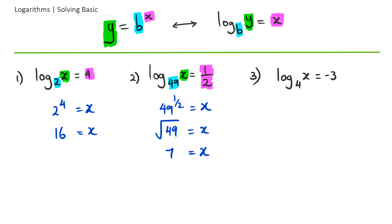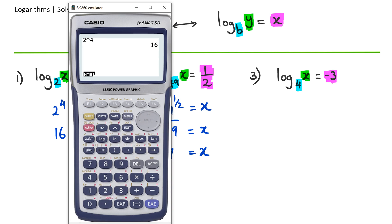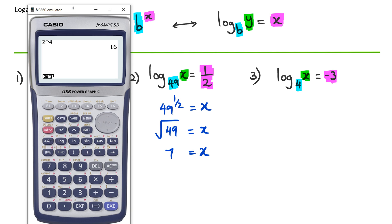Let's go to the next question. Our base is 4, our power is -3, and our answer is x. Going back to the previous question, if you get any numbers apart from 1/2, you can just go 49 to the power of 1/2 on your calculator. It's the same thing as doing square root of 49. But anyway, going back to question number three.